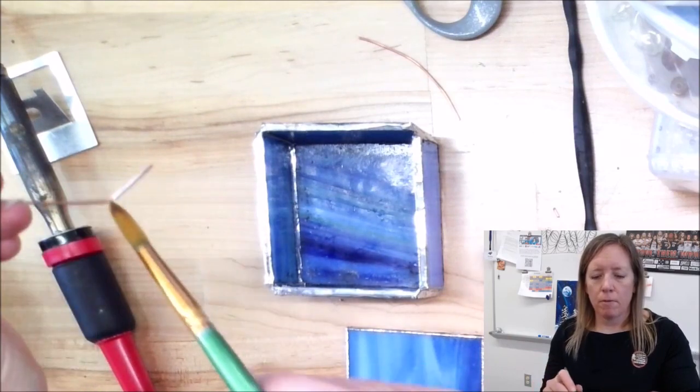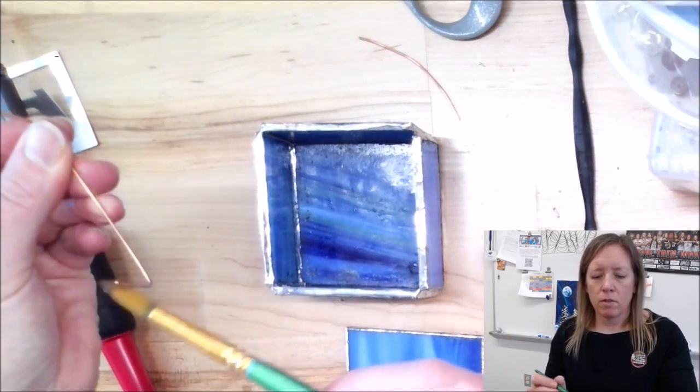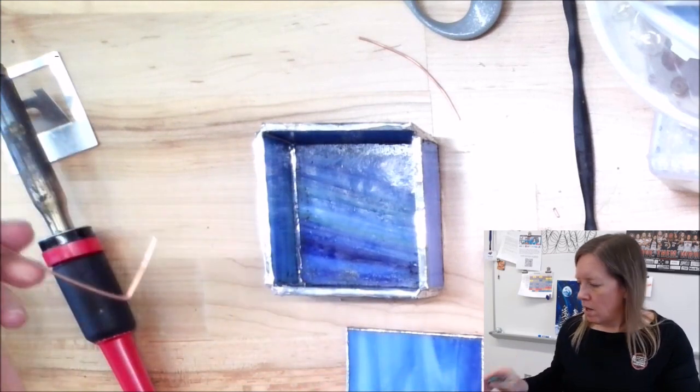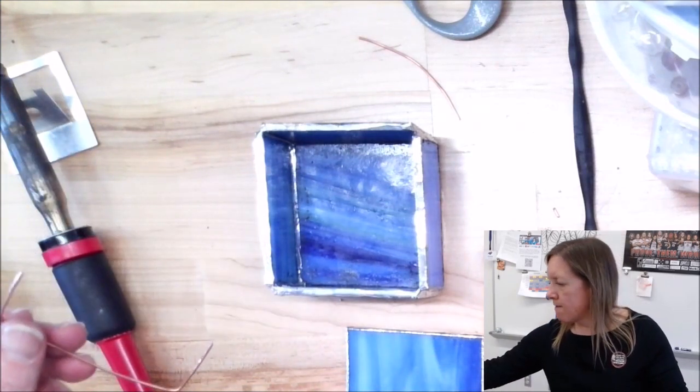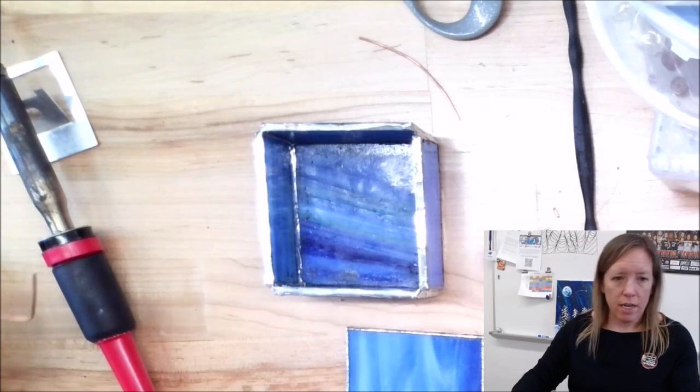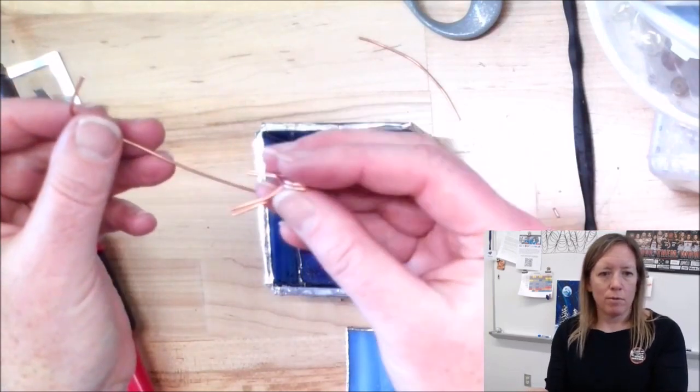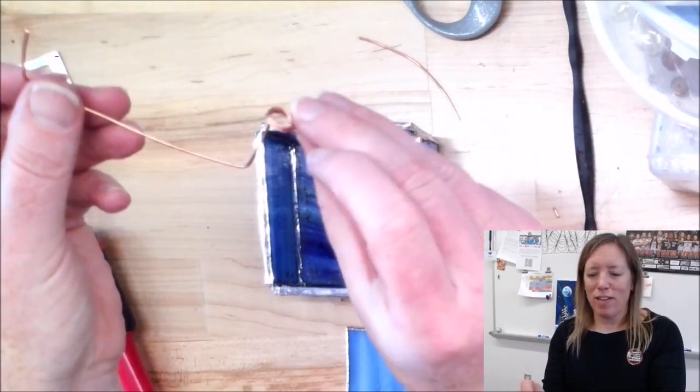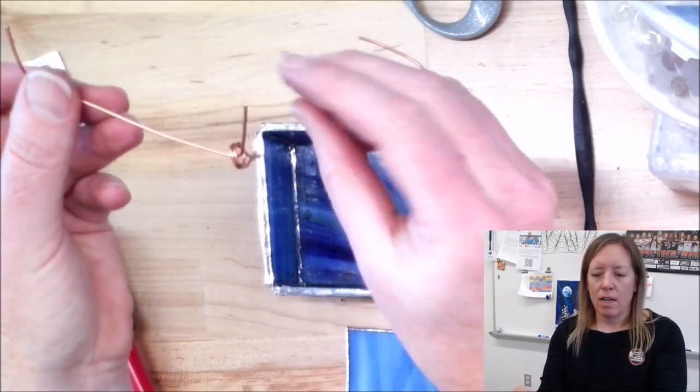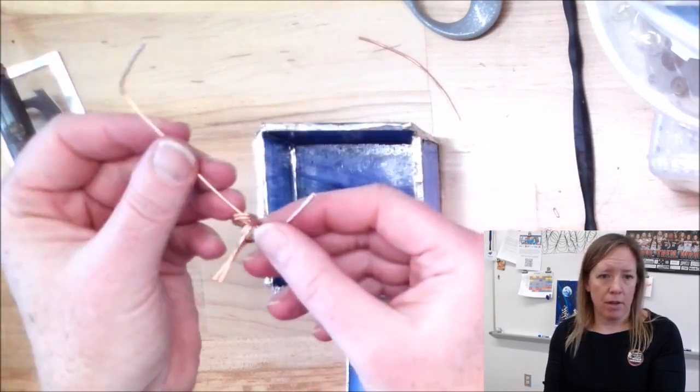You need to flux anything that's going to get soldered. Right. So I'm going to flux both of these ends. And then I'm going to take, I just think I did all of that off camera. I'm going to take these little hinges that I made and place them on there first.